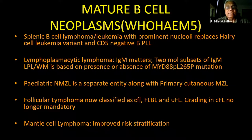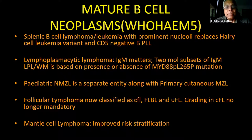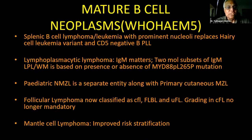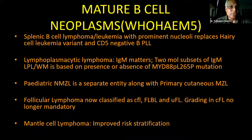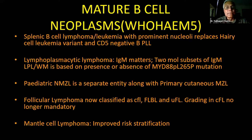The lymphoplasmacytic lymphoma section now stresses that IgM matters — there are two molecular subsets of IgM. The lymphoplasmacytic lymphoma or Waldenström's macroglobulinemia is now based on presence or absence of the MYD88 L265P mutation. A lot of stress is being given on molecular categorization of lymphoma. Surprisingly, while so much importance is given to molecular testing, only select labs in countries like ours have molecular identification capabilities. The pediatric nodal marginal zone lymphoma is now a separate entity, along with primary cutaneous marginal zone lymphoma.